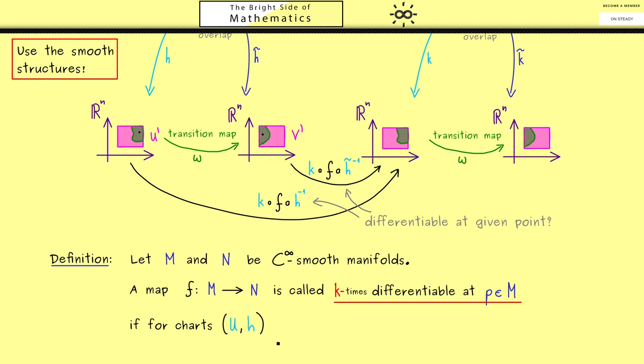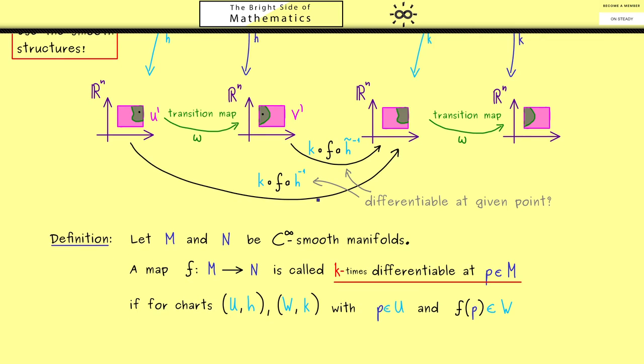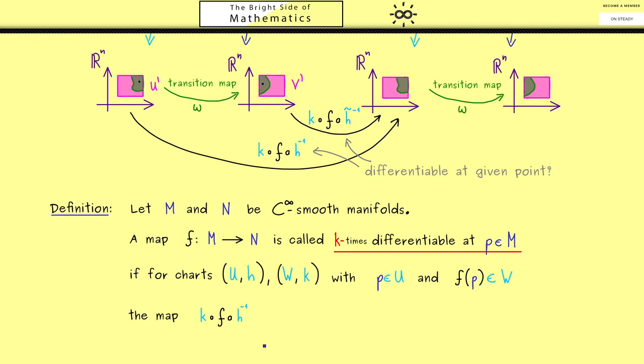Okay, and now in order to define it we just need a chart on the left-hand side and a chart on the right-hand side. Moreover, of course what we also need is that the point p lies in U, so in the chart on the left-hand side, and the image of p, f(p), lies in W in the chart on the right-hand side. So there we have our assumptions, and then we can consider this new map here between R^n and R^n. More precisely, we would restrict this map to suitable subsets in R^n. However, this is just a technical detail. The important part for us is that this map now is k-times differentiable at the given point h(p).